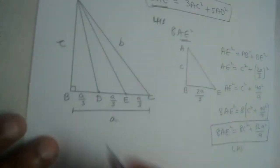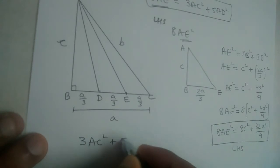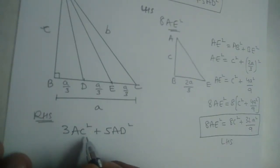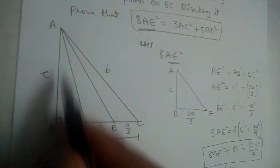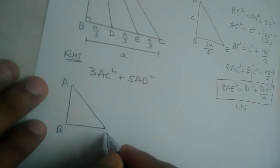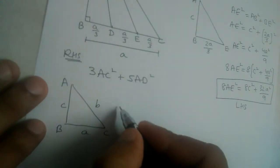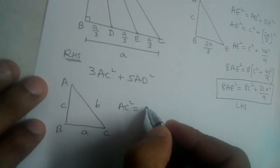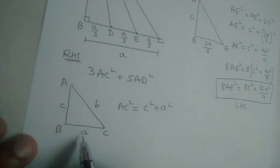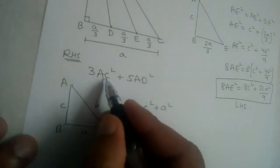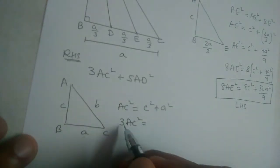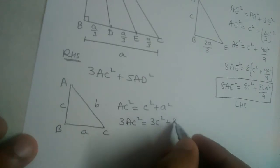Now let us simplify the RHS: 3AC² + 5AD². We need to find AC² first. For triangle ABC, applying Pythagoras theorem: AC² = AB² + BC² = c² + a². So 3AC² = 3c² + 3a².